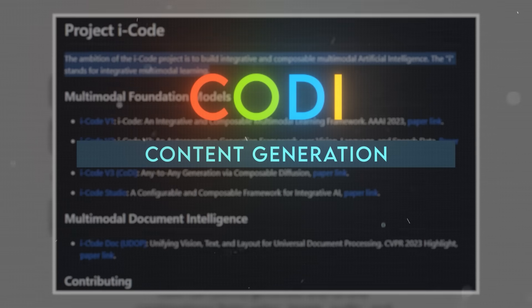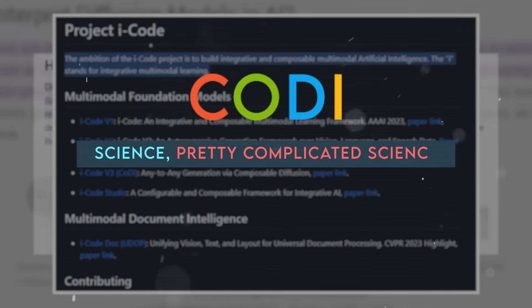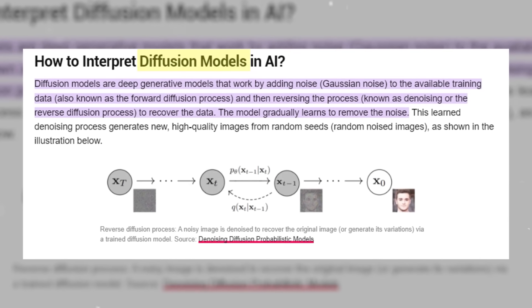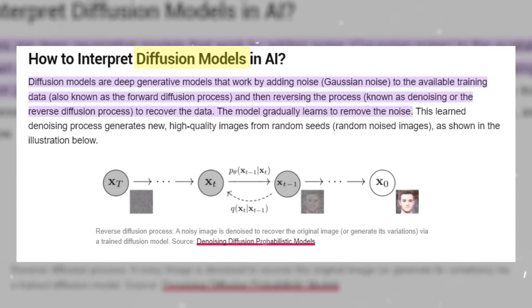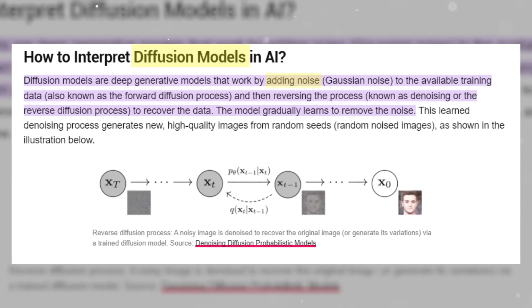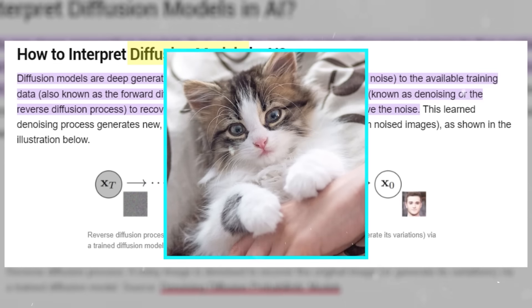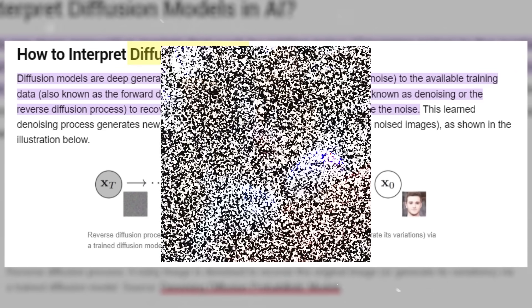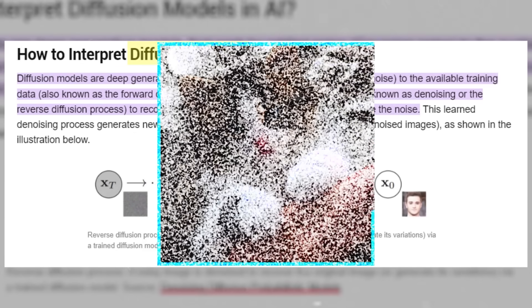So how does CODI do this? It's not magic — it's science. CODI uses a technique called diffusion models to generate content. Diffusion models are a type of generative models that learn to reverse a diffusion process that gradually adds noise to the data until it becomes random. For example, if you have an image of a cat, you can add noise to it until it becomes unrecognizable, then train a model to remove the noise and reconstruct the original image.